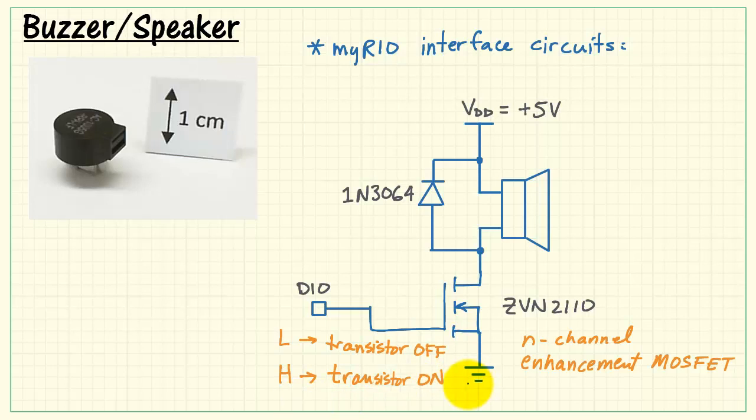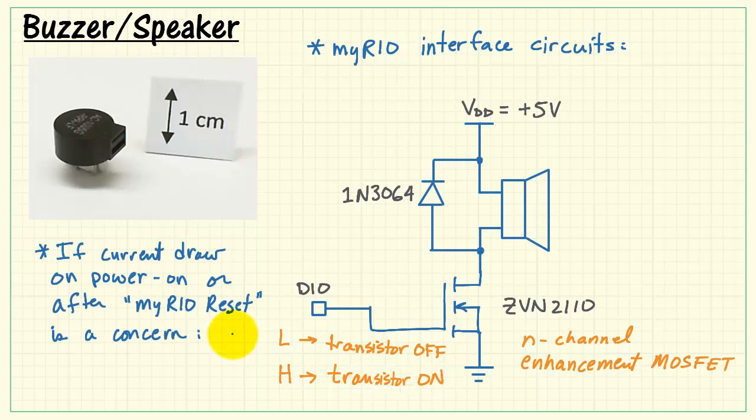Regardless of which transistor you use, setting the output low turns the transistor off, and setting the output high turns the transistor on.